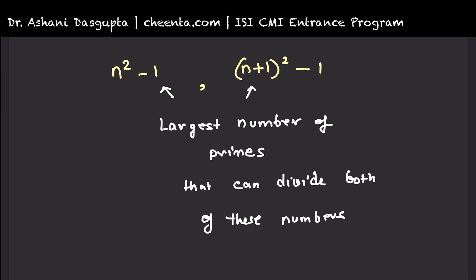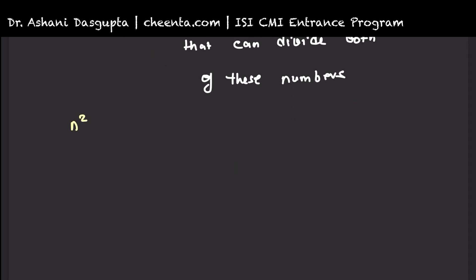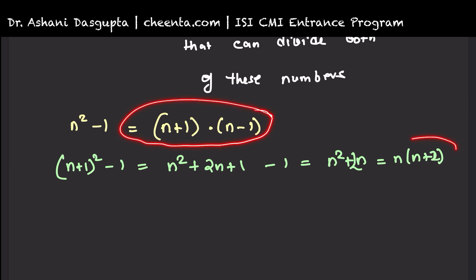It's a very simple but beautiful application of Euclidean algorithm. n square minus 1 is just n plus 1 times n minus 1. And n plus 1 whole square minus 1 is n square plus 2n which is same as n times n plus 2.